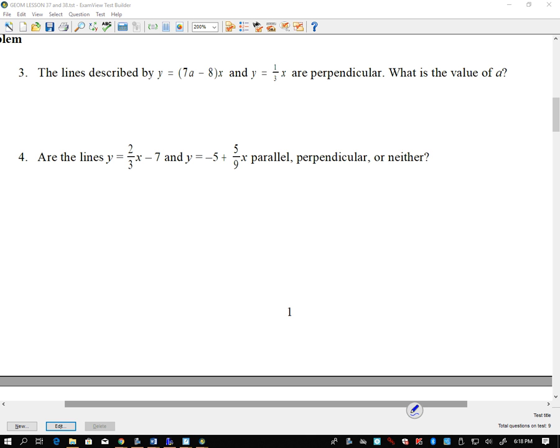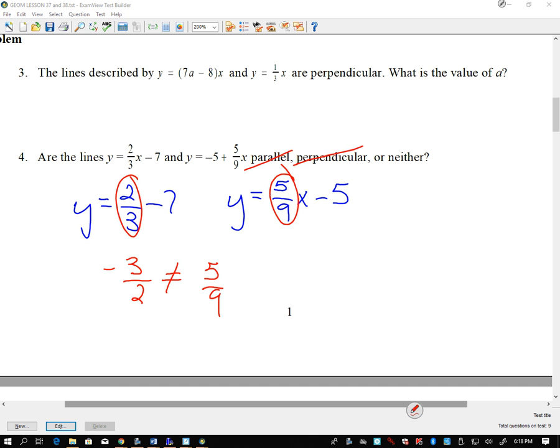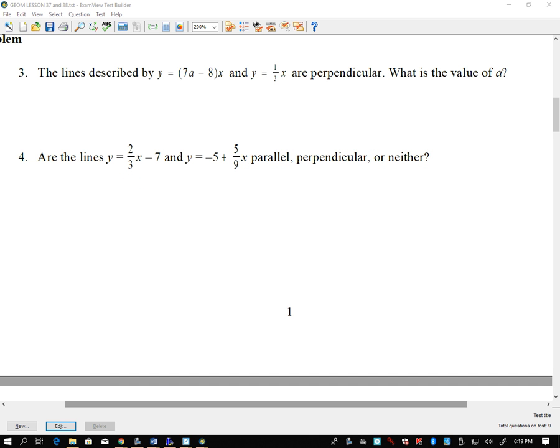Number 4. The lines y equals negative 2 thirds x minus 7 and y equals negative 5 plus 5 ninths x. Are they parallel, perpendicular, or neither? Let's go ahead and rewrite this second equation so it's actually in slope-intercept form. Are they parallel? Well, parallel lines have the same slope. 2 thirds, 5 ninths are not the same slope. Are they perpendicular? We could take 2 thirds and find the opposite reciprocal. The opposite reciprocal of 2 thirds is negative 3 halves. That's not equal to 5 ninths, so they aren't parallel, they aren't perpendicular, so they are neither.